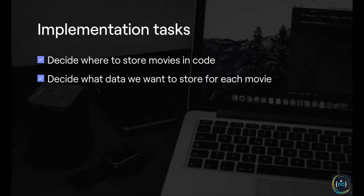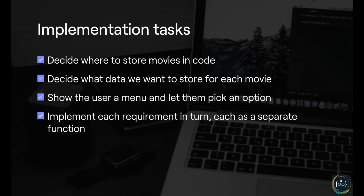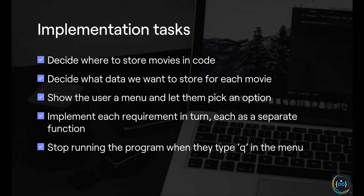We have to decide what data we want to store for each movie — whether that's a dictionary representing some movie properties, a tuple with just the properties themselves, and so on. Once we've decided these two things, we're ready to start implementing. The first step is to decide what the user is going to see when they interact with our application, so we're going to create a menu and let users pick an option. Then we implement each requirement — add, list and find movies — each as a separate function.